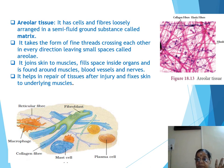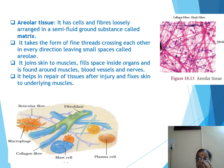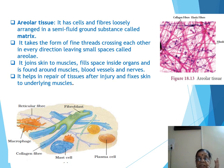The areolar connective tissue takes the form of fine threads crossing each other in every direction, leaving small spaces called areoles. It is formed of collagen fiber and elastic fiber. Collagen is a protein substance. In the diagram, fibroblasts are visible enclosing collagen fibers.